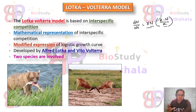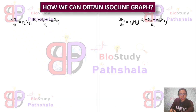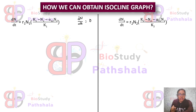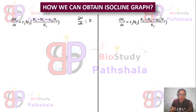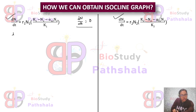Now, what is an isocline graph? An isocline graph represents the values where dN/dt = 0. We need to learn about the isocline graph because if we want to interpret the Lotka-Volterra model equations, we must understand it. We will now see what we can obtain from the two equations by setting dN/dt = 0.